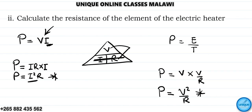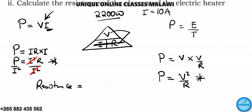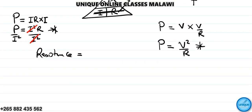Let's use P = I²R. Power equals 2,200 watts and current is 10 amps. To find R, we divide both sides by I squared. The I squared cancels, leaving us with resistance equals power divided by current squared.